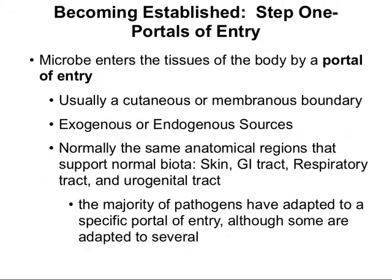We'll begin by looking at how microbes become established — step one, considering the portals of entry. How do microbes enter our body? Usually they'll either come in through a cutaneous or membranous boundary. The source of microbes can either be exogenous from the outside, or endogenous sources — those that already live within us and have maybe grown out of control. Normally they come from the same anatomical regions that support normal biota: our skin, our gastrointestinal tract, the respiratory tract, and the urogenital tract.